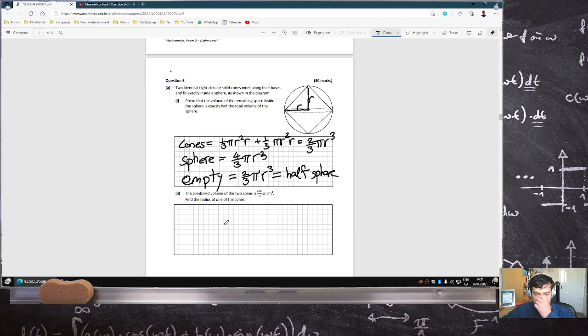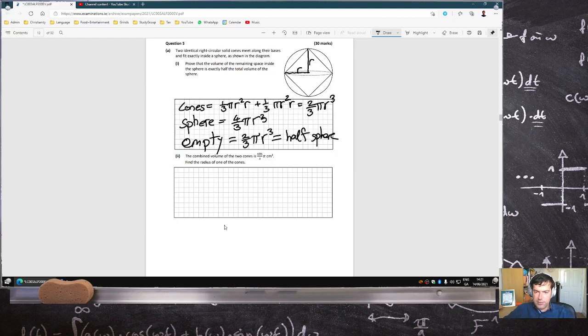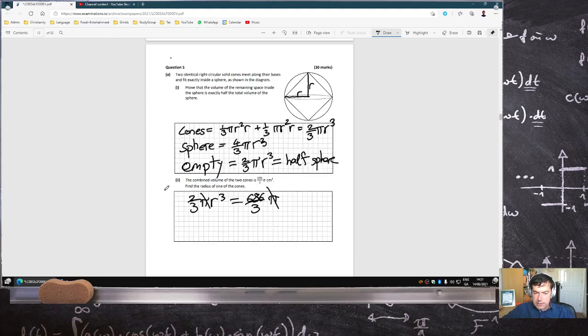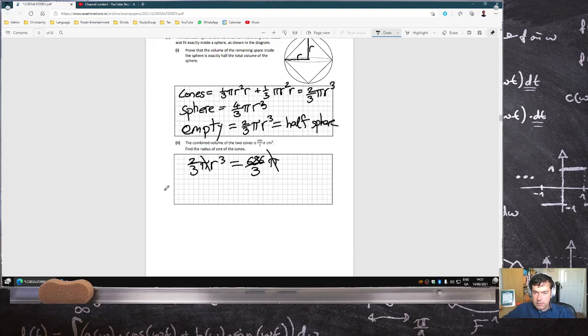The combined volume of the two cones - find the radius of one of the cones. Two-thirds pi r cubed equals 686 over three pi. When the threes cancel, 686 divided by two, cube root, seven.